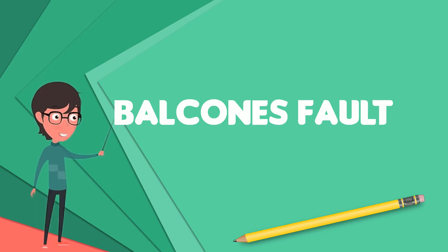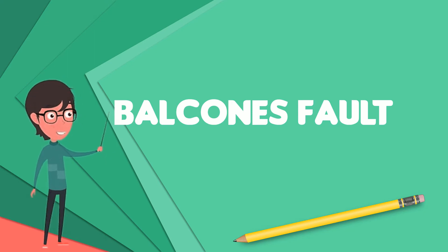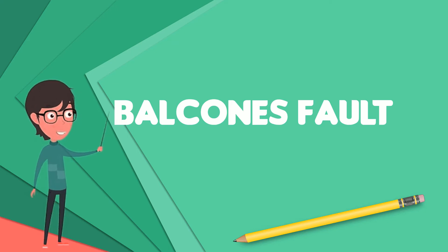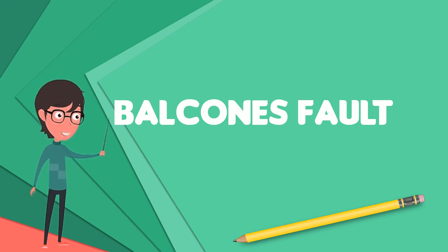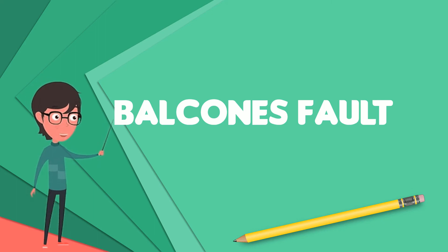The Balcones Fault is in one of the lowest risk zones for earthquakes in the United States. The surface expression of the Fault is the Balcones Escarpment, which forms the eastern boundary of the Texas Hill Country and the western boundary of the Texas Coastal Plain, and consists of cliffs and cliff-like structures.